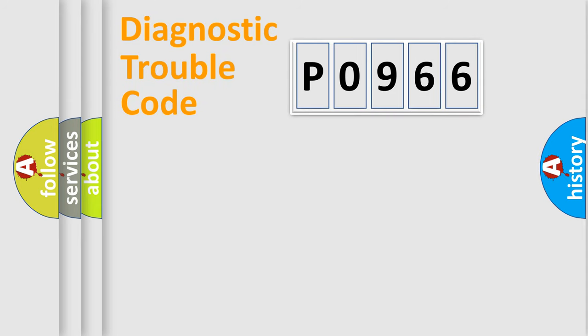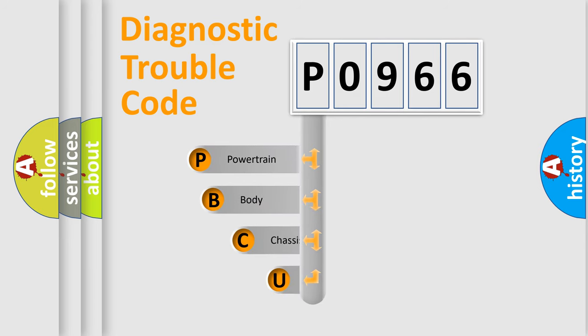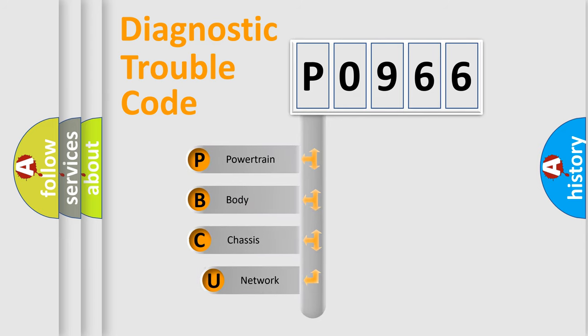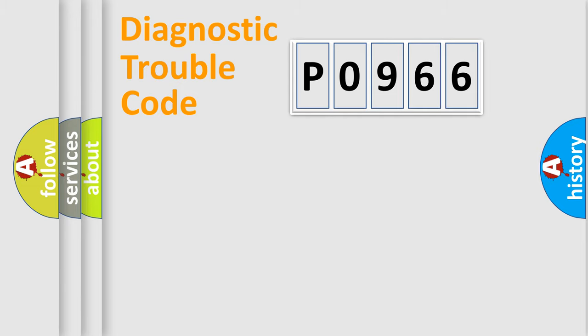Let's do this. First, let's look at the history of diagnostic fault code composition according to the OBD2 protocol, which is unified for all automakers since 2000. We divide the electric system of an automobile into four basic units: Powertrain, Body, Chassis, and Network.